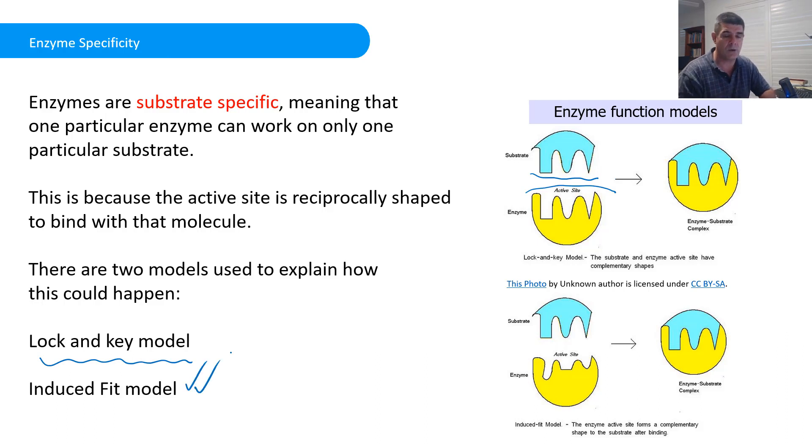But we now have a more favored model called the induced fit model. What this means is the lock and key has disappeared a little because the key going in doesn't have to be perfect. It should be roughly correct, but the enzyme and substrate, when they bind together, shuffle around a little bit to make that fit a perfect fit.